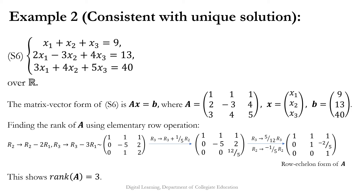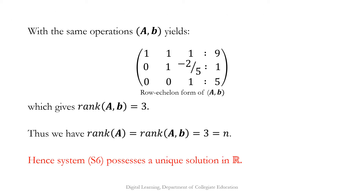Applying elementary row operations on A: R2 → R2 − 2R1 and R3 → R3 − 3R1 gives the matrix 1, 1, 1; 0, −5, 2; 0, 1, 2. Then R3 → R3 + (1/5)R2 gives the matrix 1, 1, 1; 0, −5, 2; 0, 0, 12/5. This is in row echelon form with 3 non-zero rows, so rank(A) = 3.